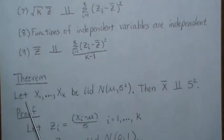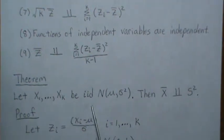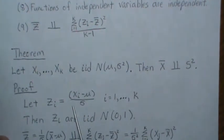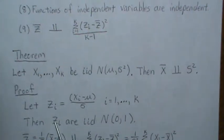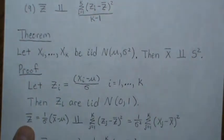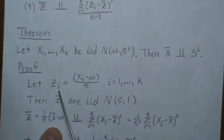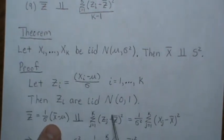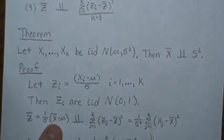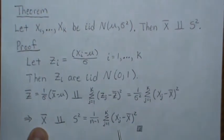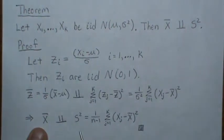Now for the general case: let x₁, …, xₖ be iid normal with mean μ and variance σ². We want to show x̄ is independent of S². Define zᵢ = (xᵢ − μ)/σ, so the zᵢ's are iid standard normal and fit the previous setup. We just showed that z̄ is independent of Σ(zᵢ − z̄)². Substituting back, z̄ is a function of x̄, and Σ(zᵢ − z̄)² is a function of S², so the sample mean and sample variance are independent.